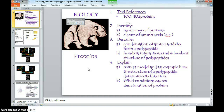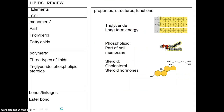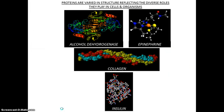Now let's look at proteins in great detail. Proteins are varied in structure, reflecting their diverse roles. Here's an enzyme, alcohol dehydrogenase. Some proteins are hormones — they're chemical signals — and they're structural, like the collagen in your skin, or another very important hormone is insulin that regulates blood sugar levels.